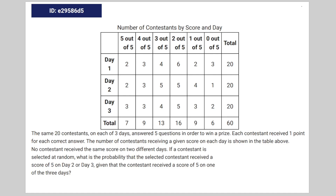We're given the following math problem: The same 20 contestants on each of three days answered five questions in order to win a prize. Each contestant received one point for each correct answer. The number of contestants receiving a given score on each day is shown on the table above. No contestant received the same score on two different days. If a contestant is selected at random, what is the probability that the contestant received a score of five on day two or three, given that the contestant received a score of five on just one of the three days?